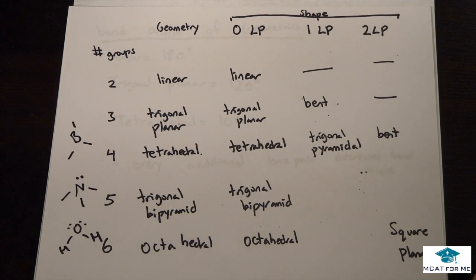So we have a shape that is bent, okay? So the shape is different from the geometry in this case whenever they have lone pairs. So once again, the shape was bent and the geometry was tetrahedral.